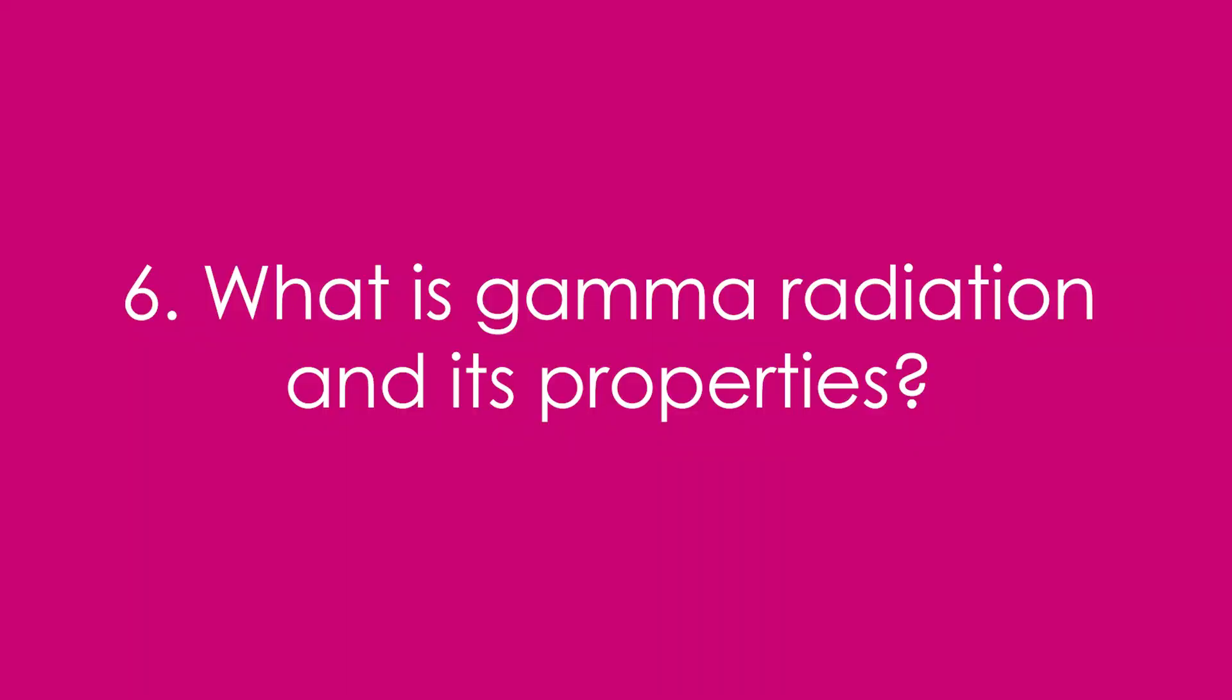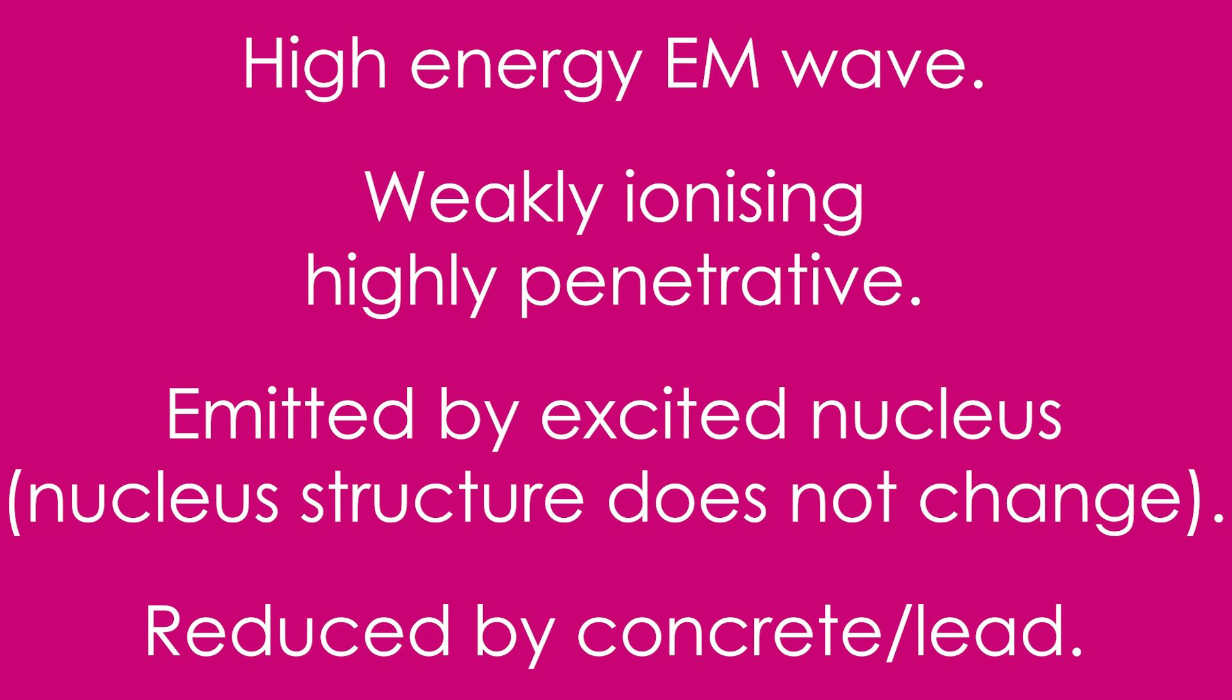6. What is gamma radiation, and its properties? It's a high energy electromagnetic wave, it's weakly ionising, but highly penetrative. It's emitted by an excited nucleus, so the nucleus doesn't change when it emits it, unlike alpha and beta. It can't be stopped completely, but its intensity can be reduced by concrete and lead effectively.